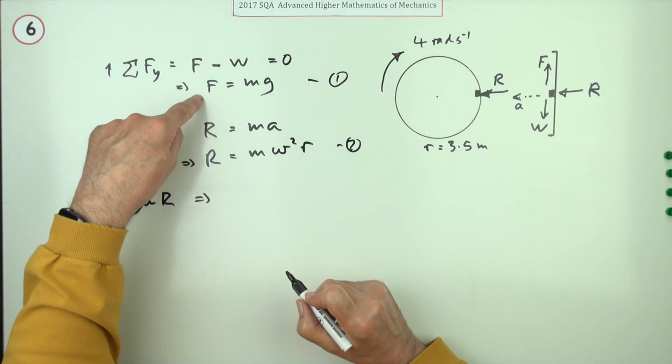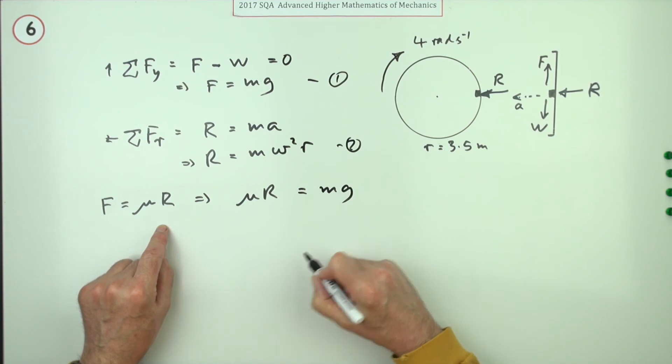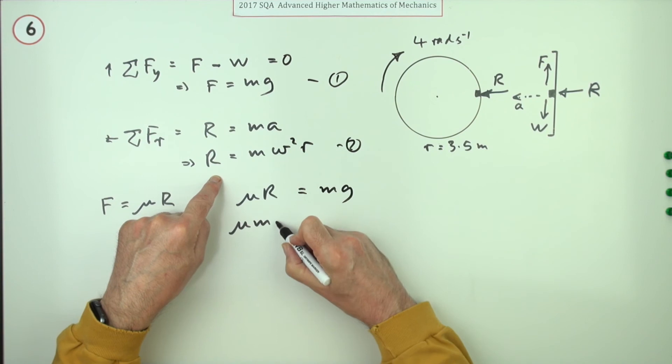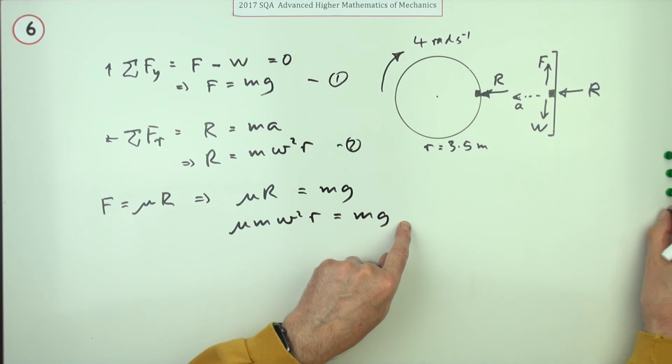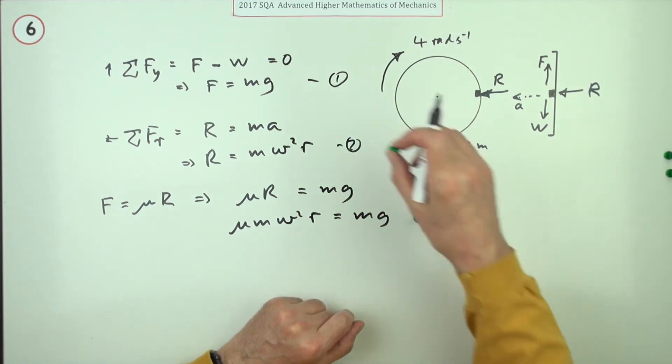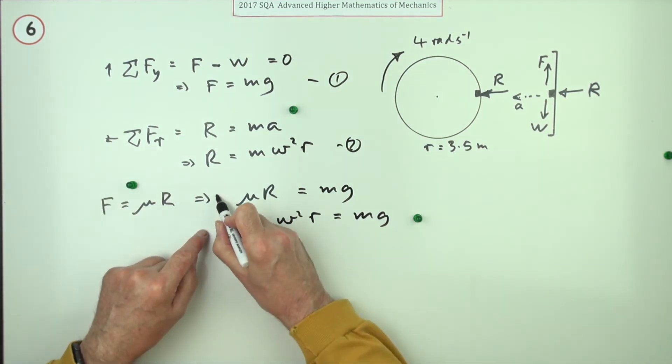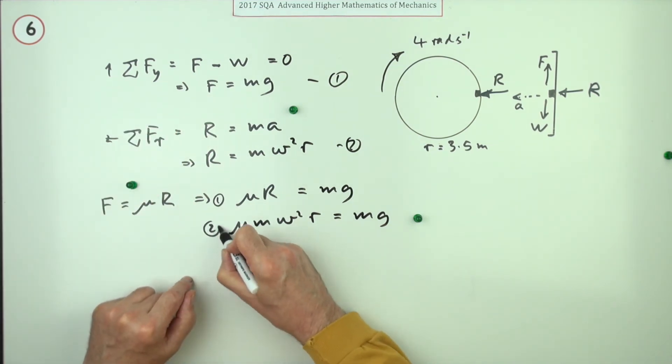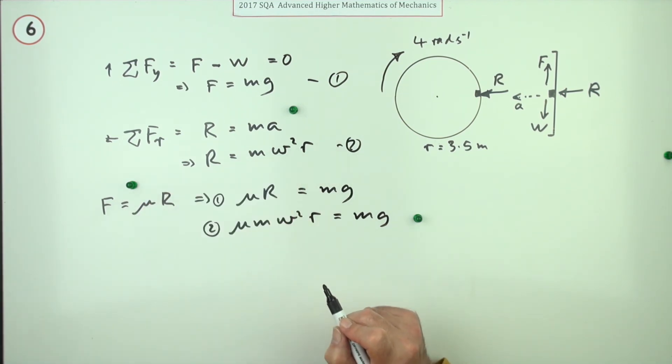So we've got equation one and equation two, and from that one we can replace it in here. So you've got μR equals mg - that was using number one. Using number two: μ m ω² R equals mg. Now at that point that's definitely where they put the third mark. That came from equation one by replacing F with μR. That came from equation two by replacing the R here with this.